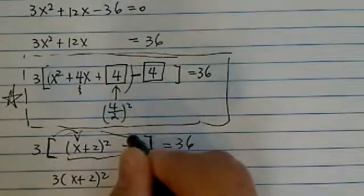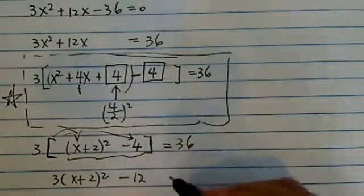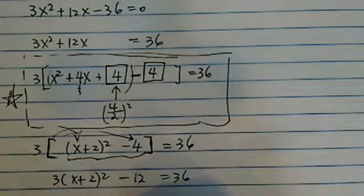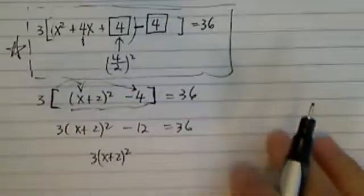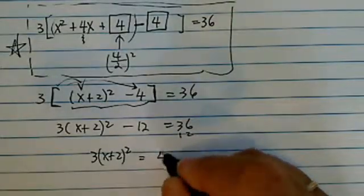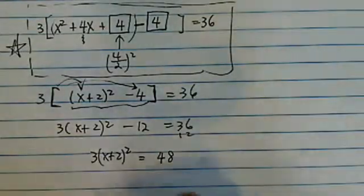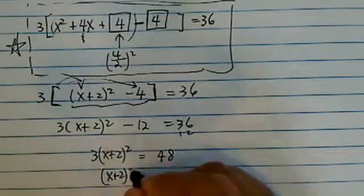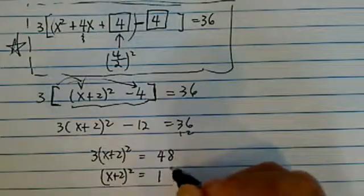Okay, I can keep track of it this way a lot easier. Equal to 36. I'm going to do 3 times x plus 2 squared is equal to, I'm going to add a 12 on this side. So I have a 48. Okay, I'm going to divide it by 3 because there's a common factor in there. x plus 2 squared is equal to 16.